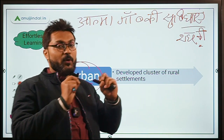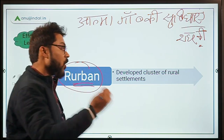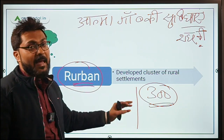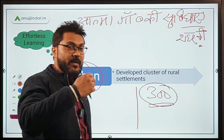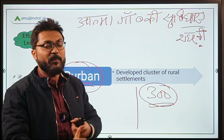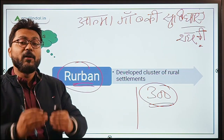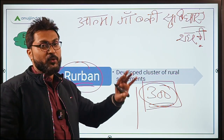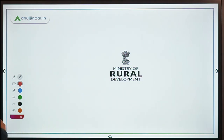Through this scheme, the government wants to promote development in rurban clusters — to identify and develop more and more rurban clusters. The target is 300 rurban clusters to be developed in a total span of five years.